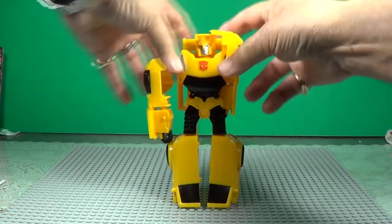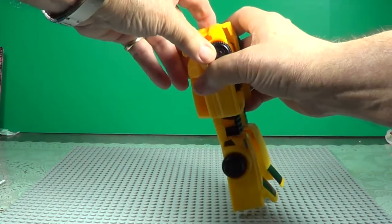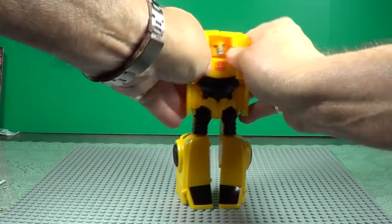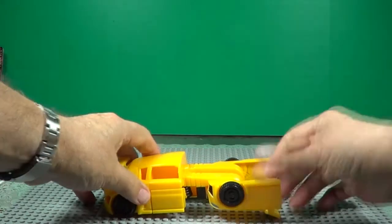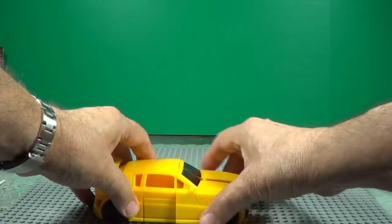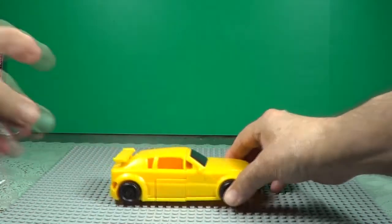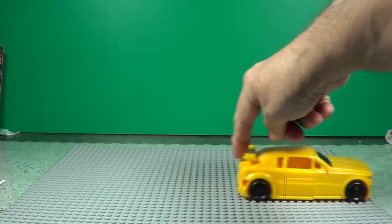Alright, fold his arms up like that. Clamp them together. Right there. Lay him down. Fold the legs up. Clamp them together right there. And there's your car. It's pretty simple.